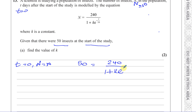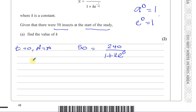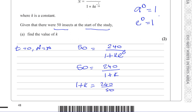That gives us e to the power of zero. Anything to the power of zero equals one, so e to the power of zero equals one. So we have 50 equals 240 divided by one plus k. Cross-multiplying gives one plus k equals 240 divided by 50, which is 4.8. Therefore k equals 4.8 minus 1, so k equals 3.8.